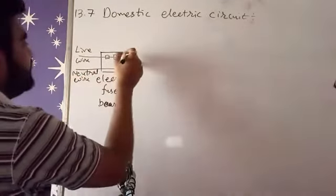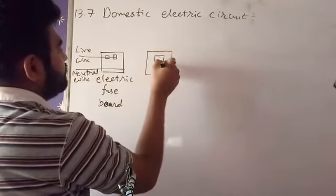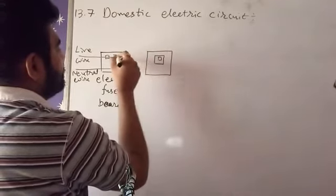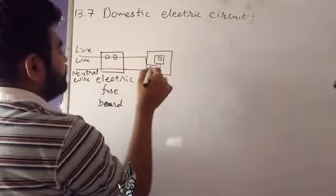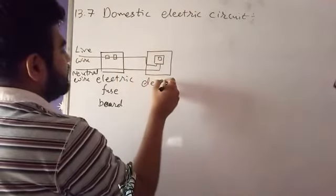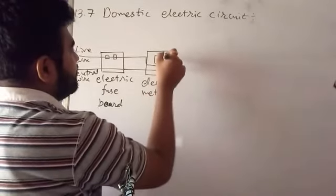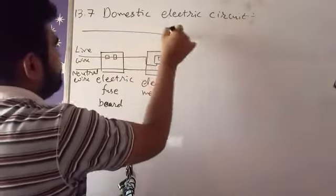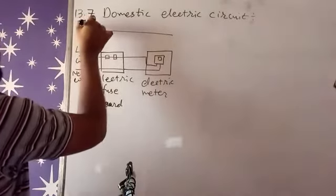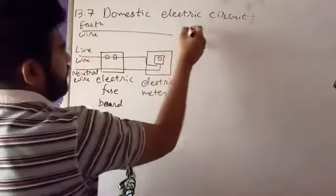Further, that is going towards the meter. So this is electric meter. Further, we are having a third wire which is called earth wire.